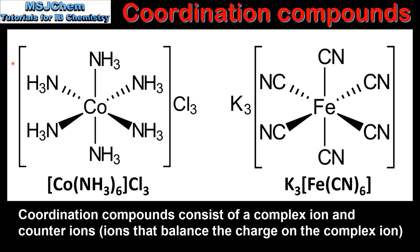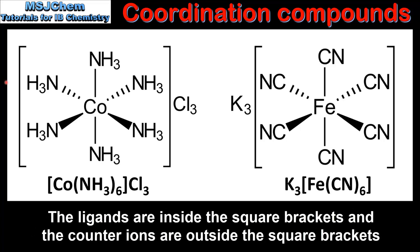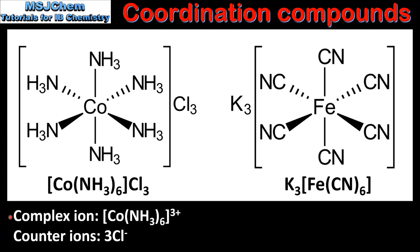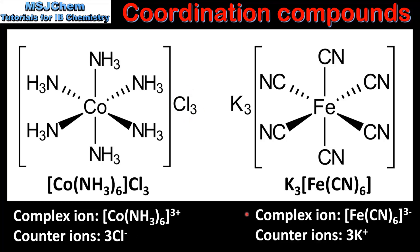Coordination compounds are formed from a complex ion and counter ions. The counter ions balance the charge on the complex ion, which makes coordination compounds neutral. In the example on the left the complex ion has a 3+ charge; the counter ions, which are 3 chloride ions, balance the 3+ charge making the coordination compound neutral. In the example on the right the complex ion has a 3− charge; the counter ions, which are 3 potassium ions, balance the 3− charge making this coordination compound neutral.